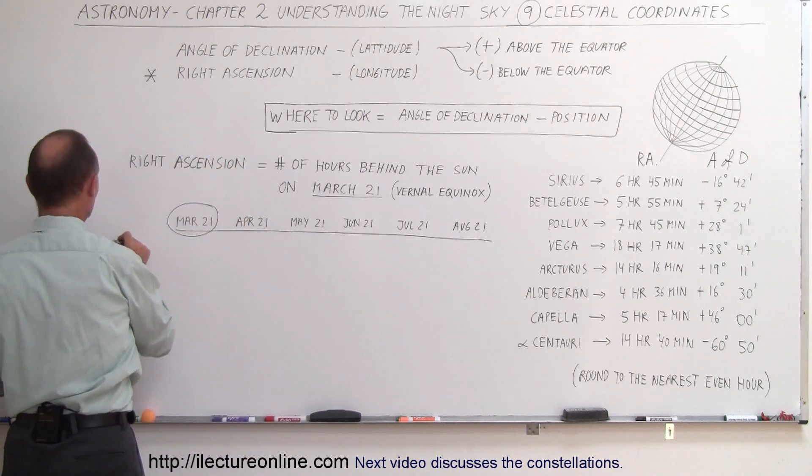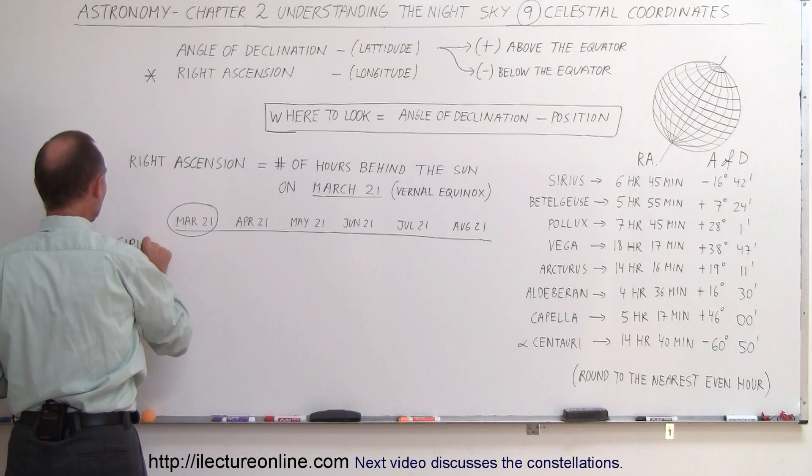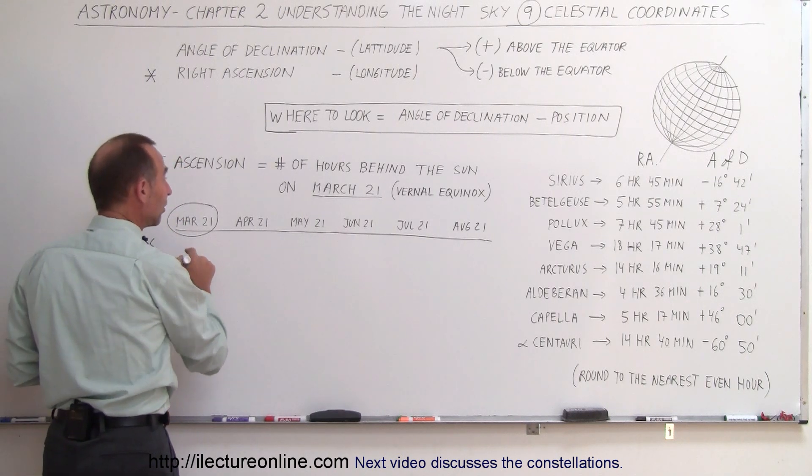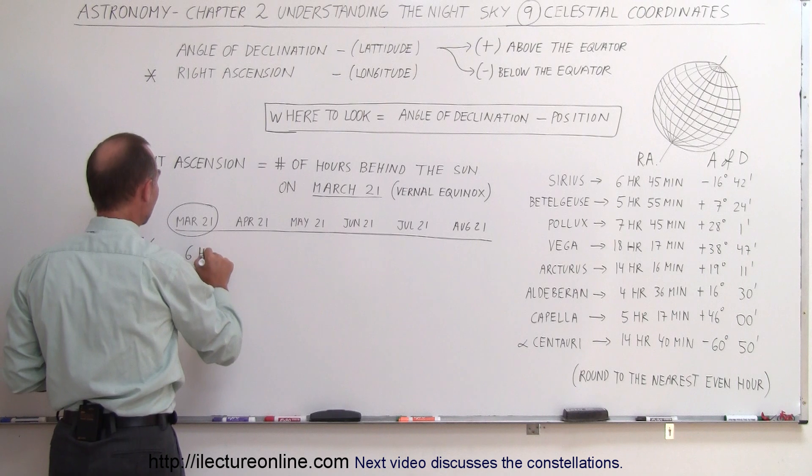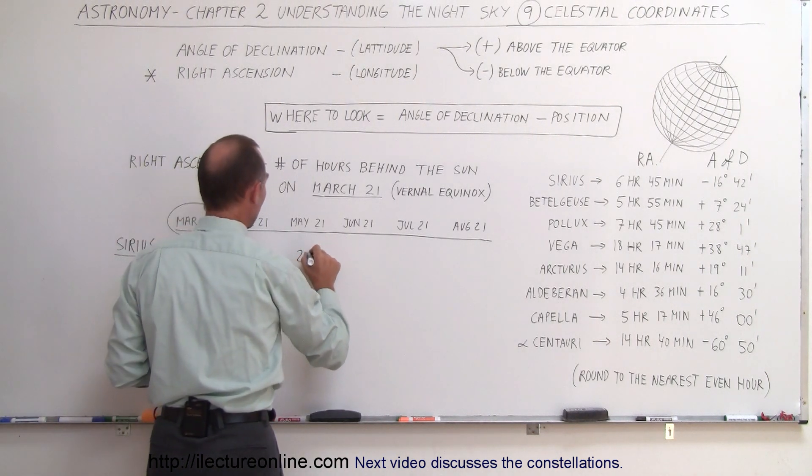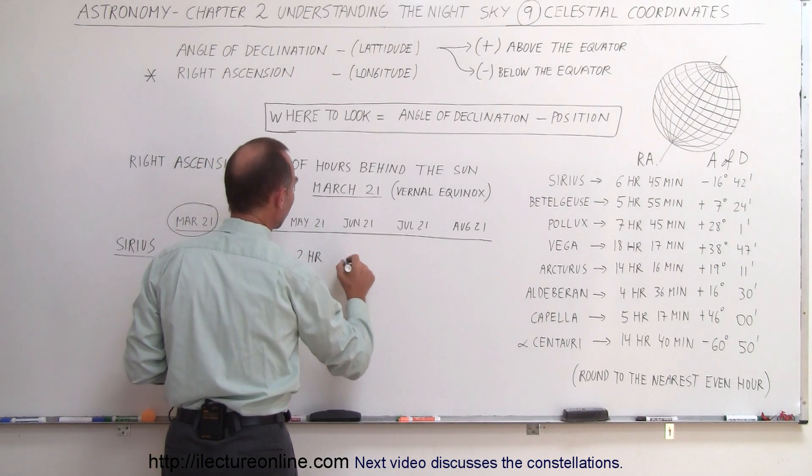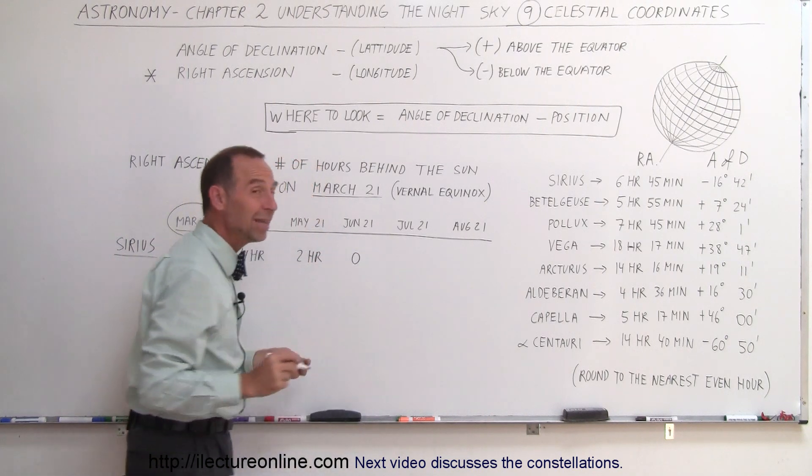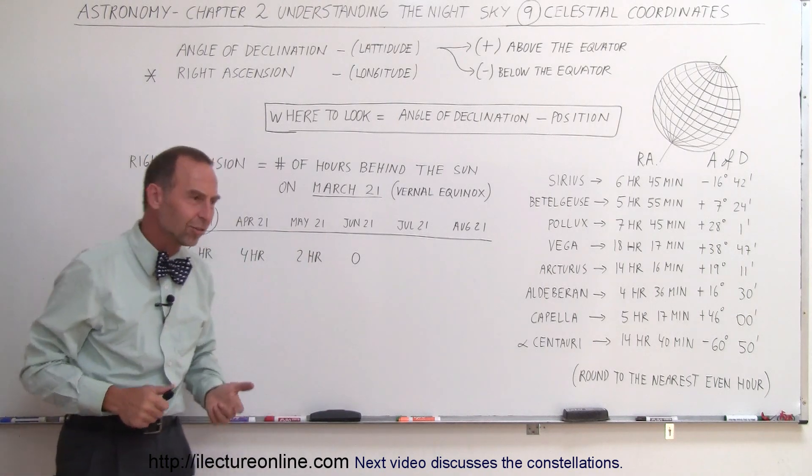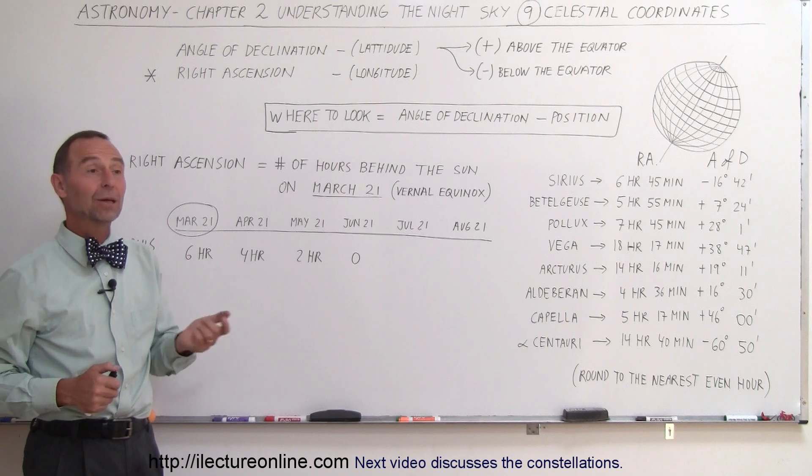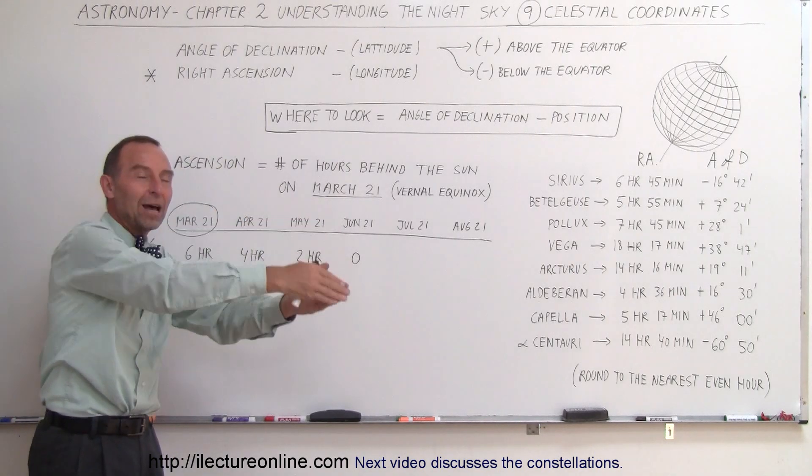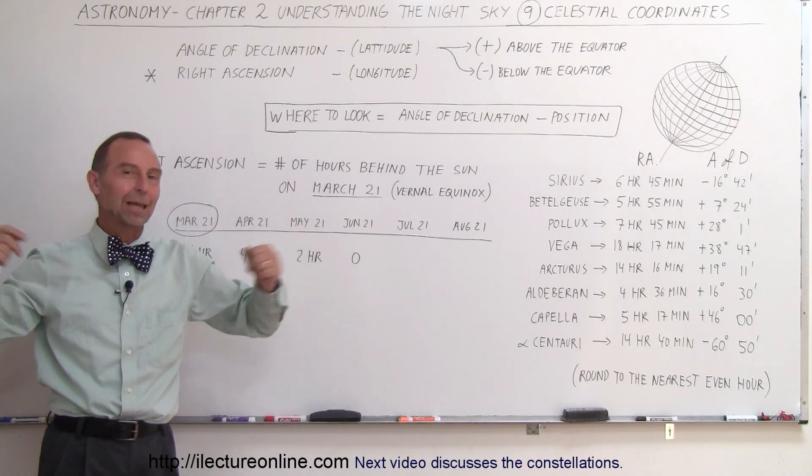So let's make a table here. So for Sirius, the brightest star in the sky, which is part of the constellation Canis Major, March 21st, six hours behind, April 21st, four hours behind, May 21st, two hours behind, and June 21st, zero, which means it's even with the Sun. So if someone says, hey, on June 21st, let's go look for Sirius, you'll be out of luck, because it'll be right in the direction of the Sun, it'll be up when the Sun comes up, it'll go down when the Sun goes down, and you will not be able to see Sirius.